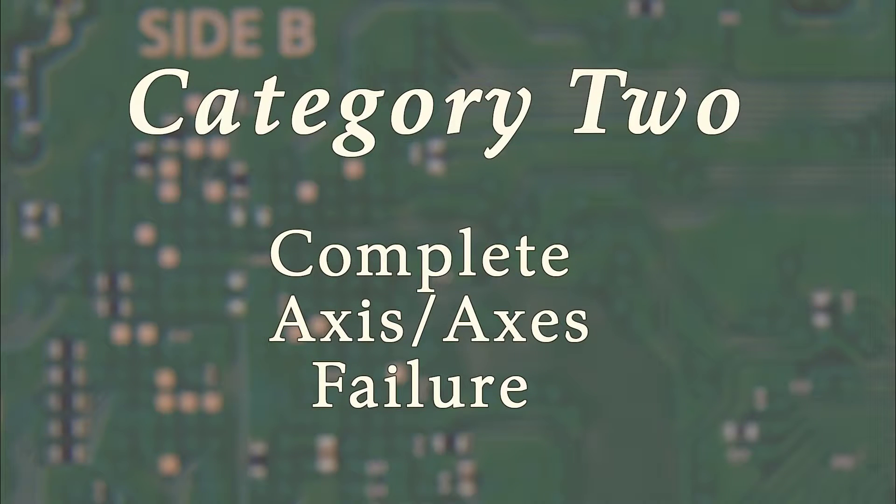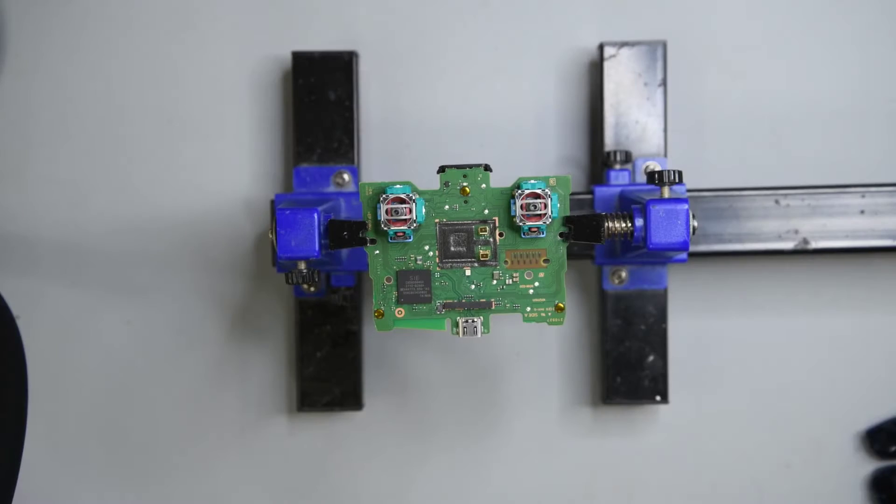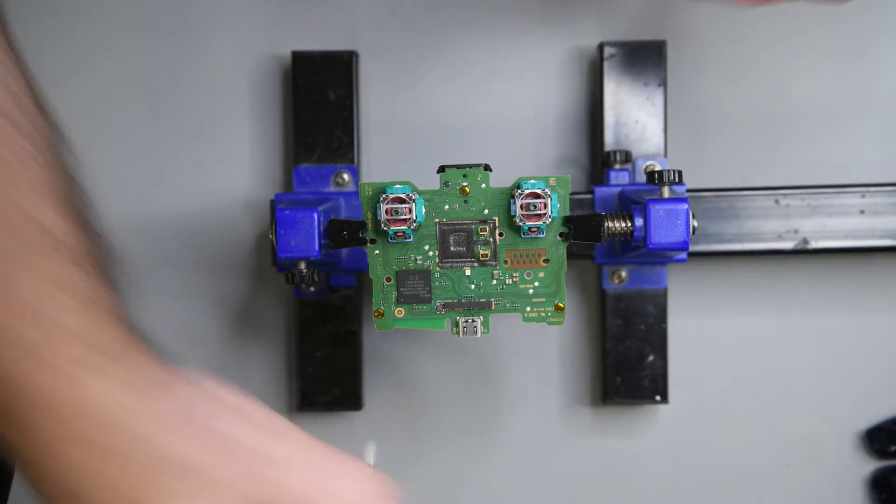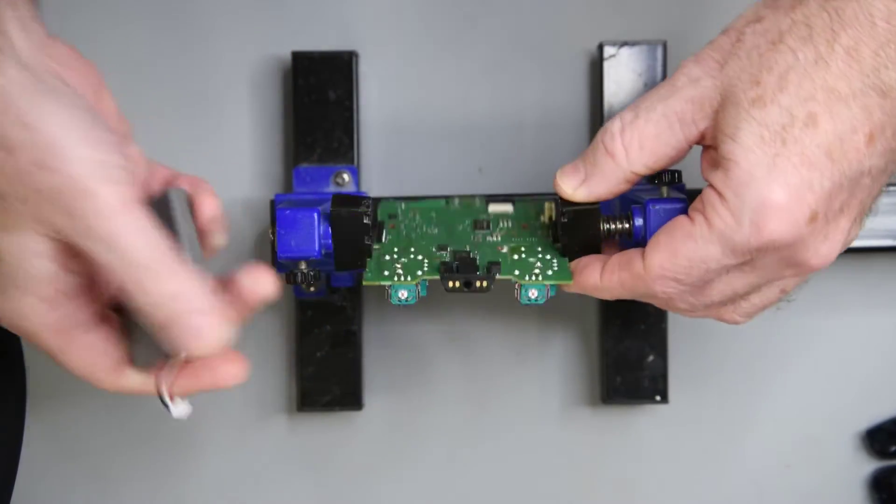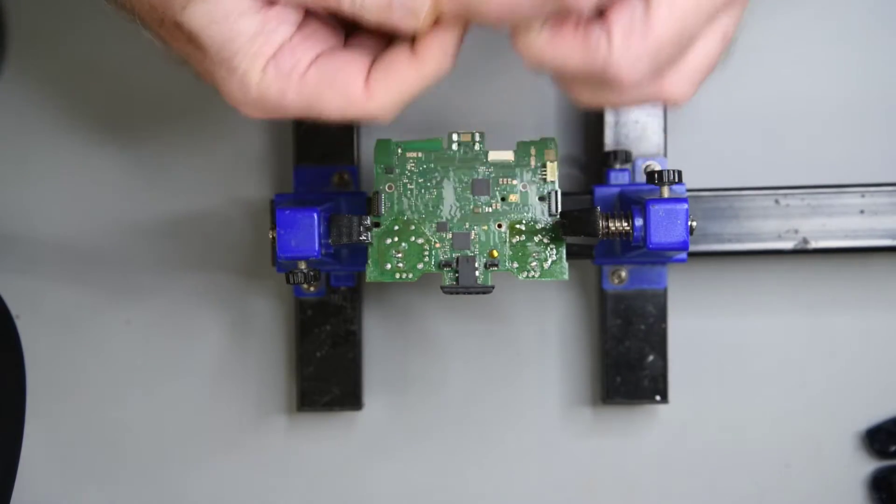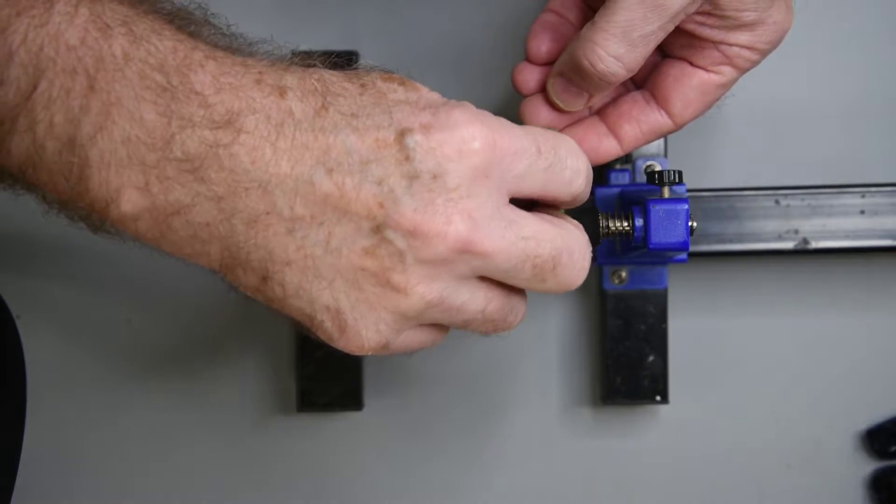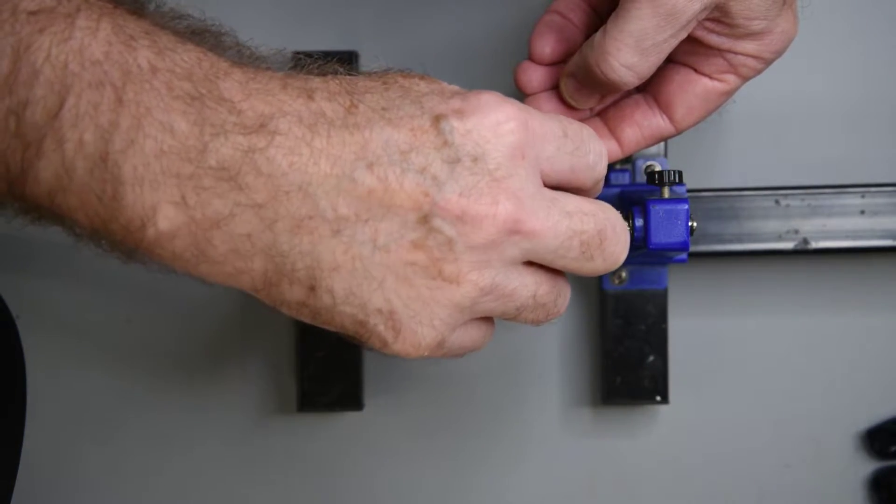The category problems I'm going to deal with in this video are the major joystick axis problems. Like no response on an axis when the stick is moved, one or both axes stuck to one extreme or the other. Basically something is very wrong now that wasn't wrong before the joystick was replaced.